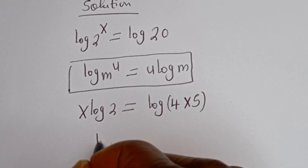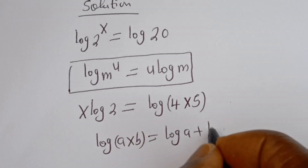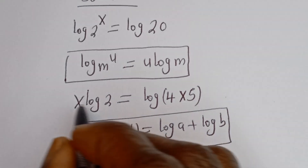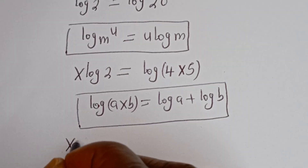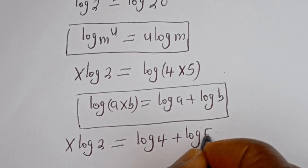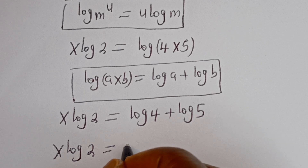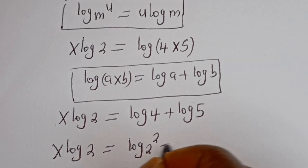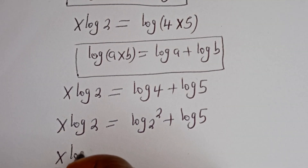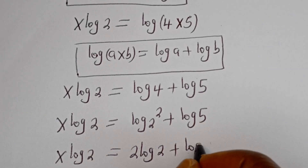Also take note of this: if you have log a multiplied by b, this is equal to log a plus log b. Then this can be written as s log 2 is equal to log 4 plus log 5. Then log 4 can be written as log 2 squared, so s log 2 is equal to 2 log 2 plus log 5.